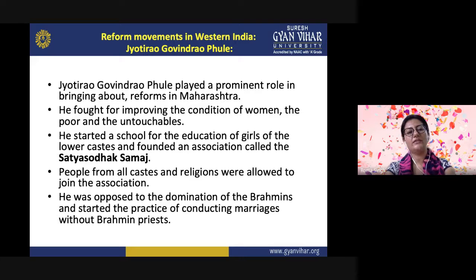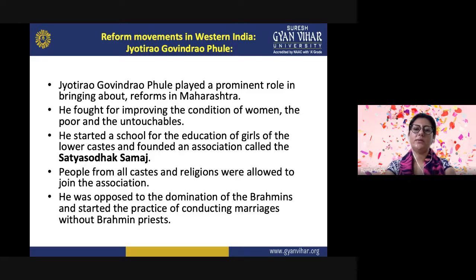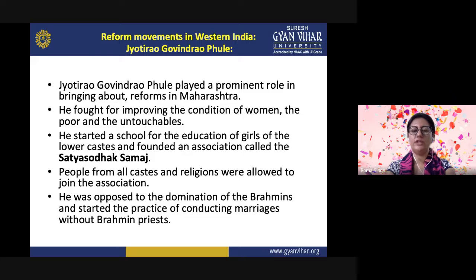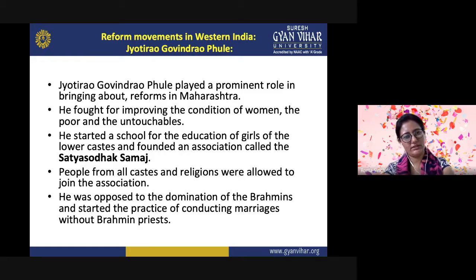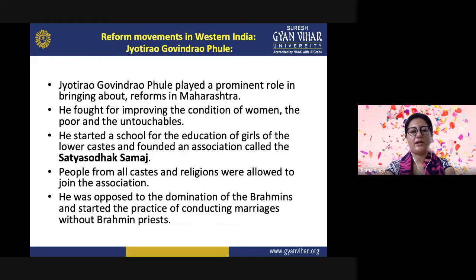Now we will look at reform movements in Western India. Jyotirao Govindrao Phule played a prominent role in bringing about reforms in Maharashtra. He fought for improving the condition of women, the poor, and the untouchables. He started a school for the education of girls of the lower castes and founded an association called the Satya Shodak Samaj. People from all castes and religions were allowed to join this association. He was opposed to the domination of Brahmins and started the practice of conducting marriages without involving a Brahmin priest.